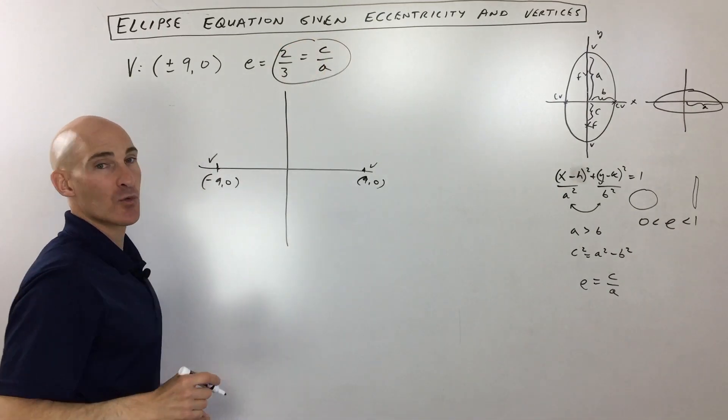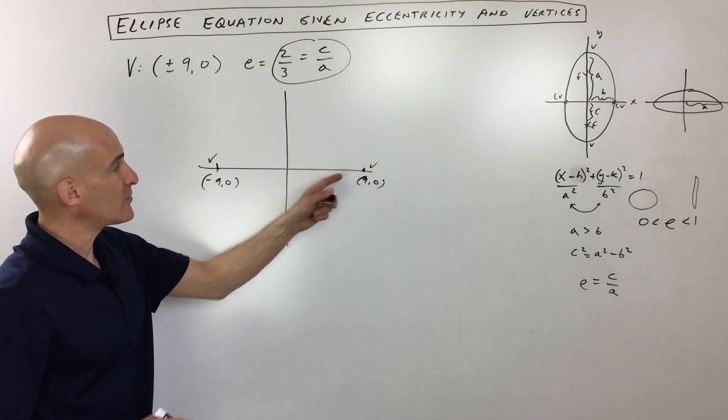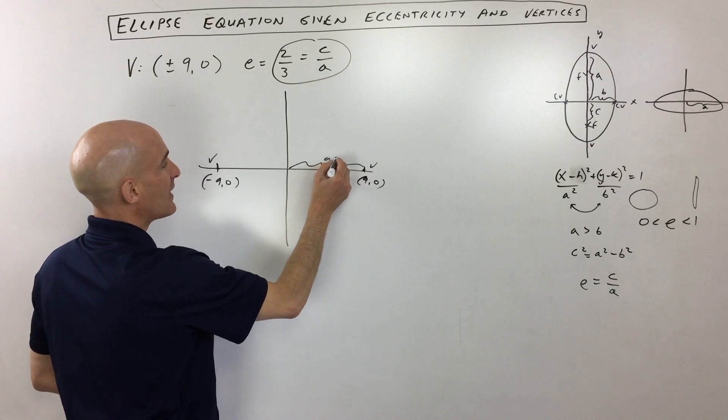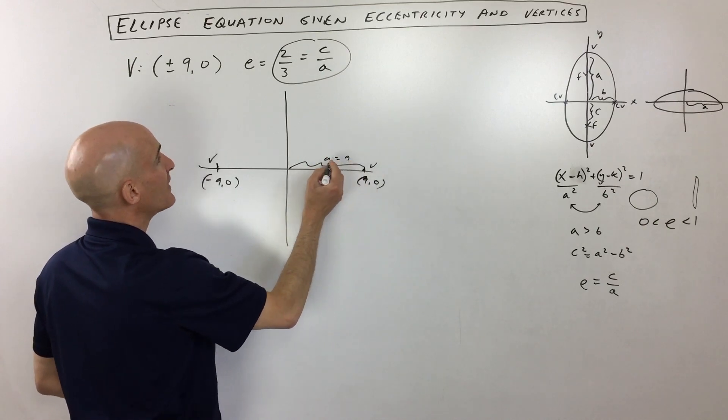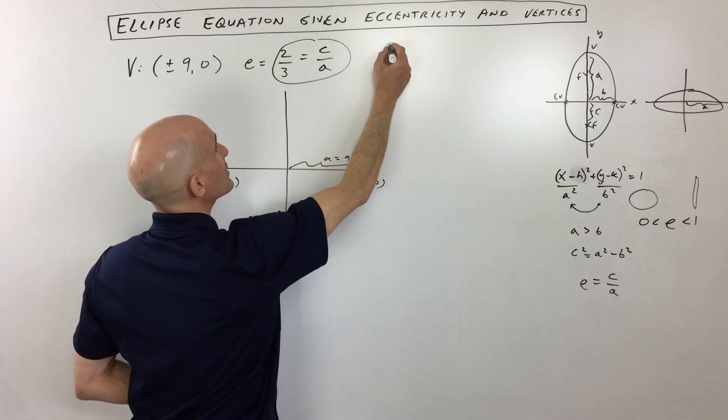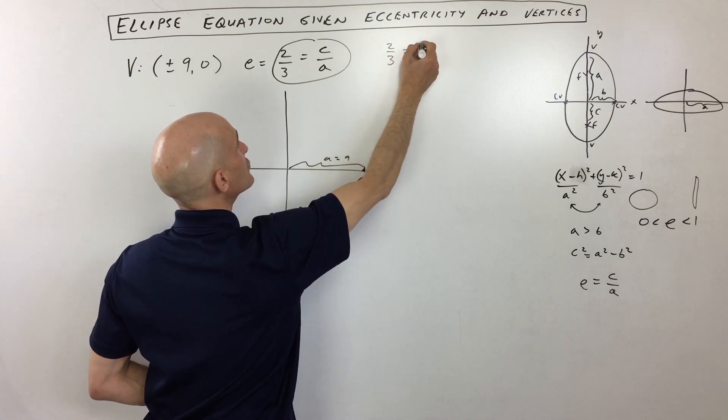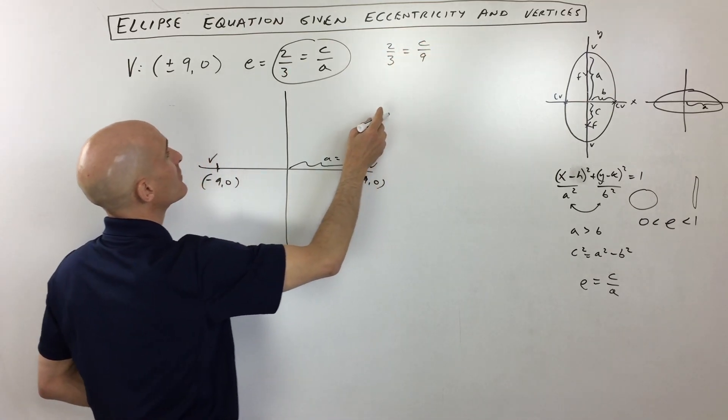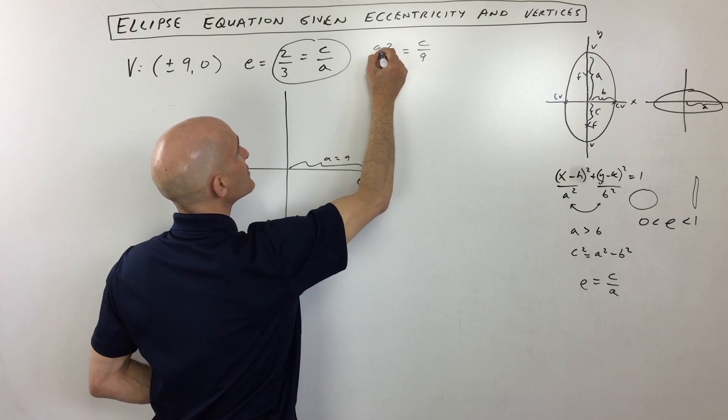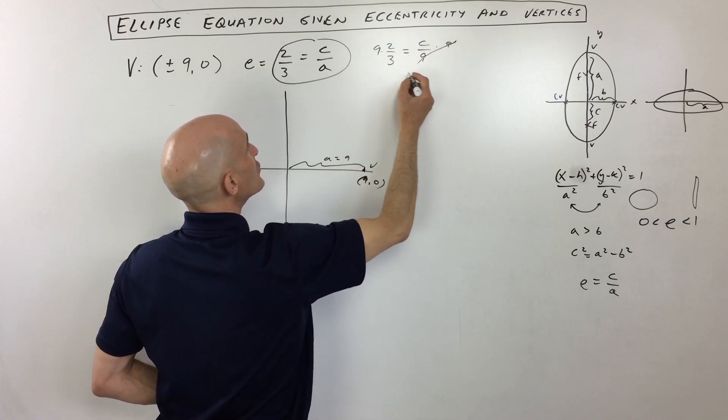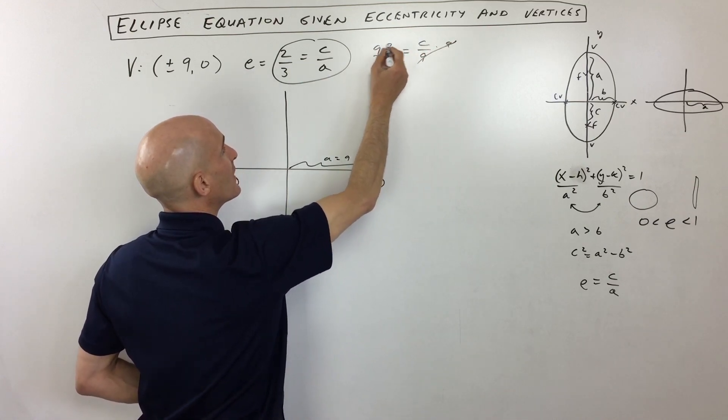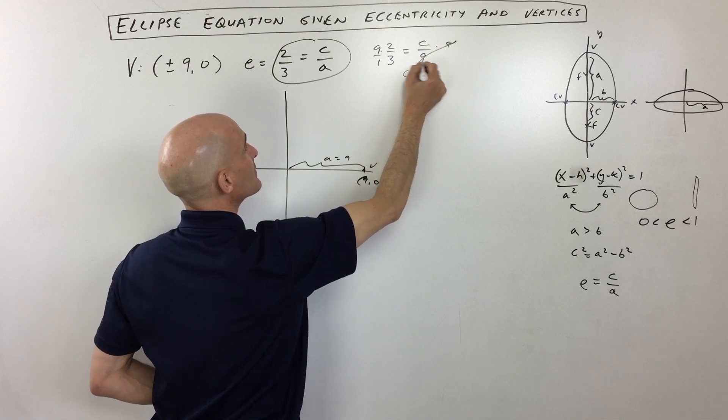So you can see we have a little bit of an equation here that we can work with. The distance from the center to the vertex, this distance right here, remember is our a, and you can see that a is equal to nine. So if we put nine in here, we get two-thirds is equal to c over nine. And if we multiply both sides by nine, you can see that c is going to be equal to 18 thirds, which is six.